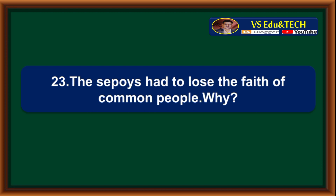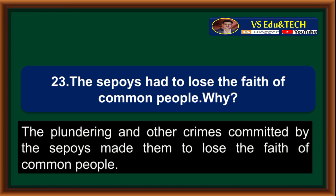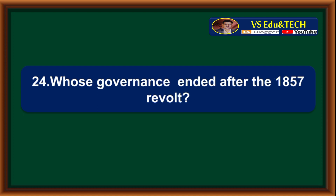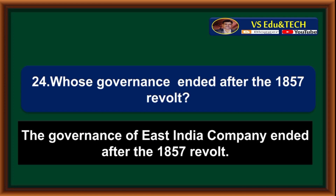The Sepais had to lose the faith of common people. Why? The plundering and other crimes committed by the Sepais made them lose the faith of common people. Whose governance ended after the 1857 revolt? The governance of the East India Company ended after the 1857 revolt.